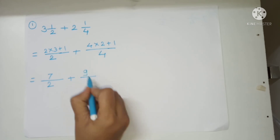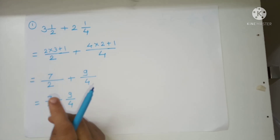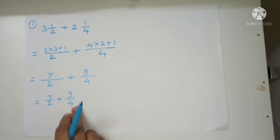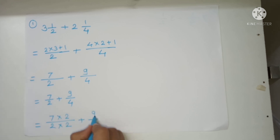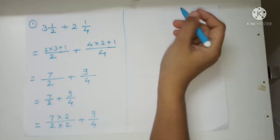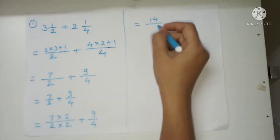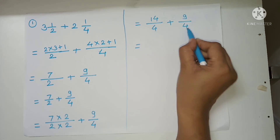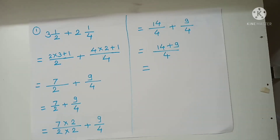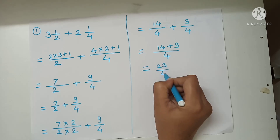Now 7 upon 2 plus 9 upon 4. The denominators are not the same, so we have to make them the same. Multiply 7 upon 2 by 2 over 2, giving 14 upon 4, plus 9 upon 4. Now the denominators are the same. We can add: 14 plus 9 is 23 upon 4.